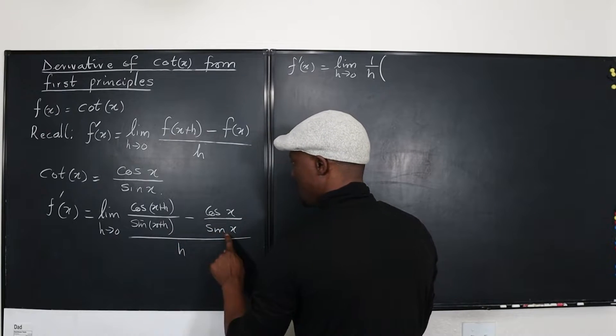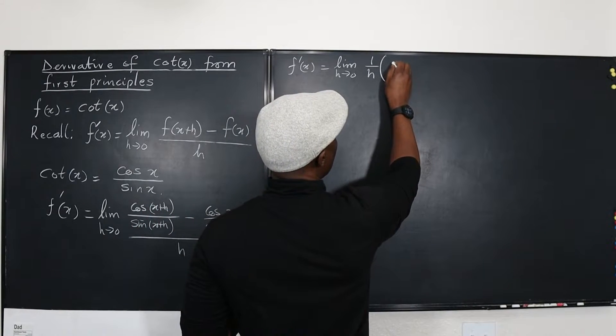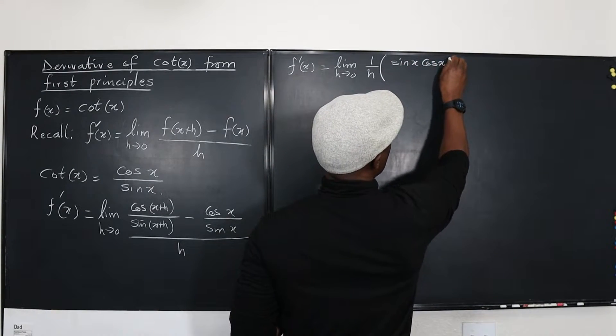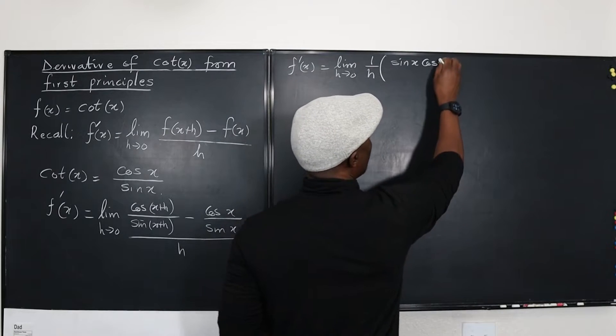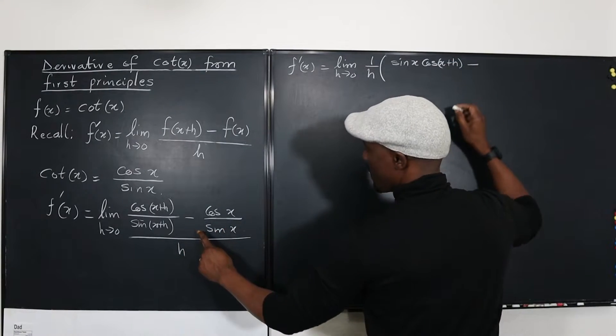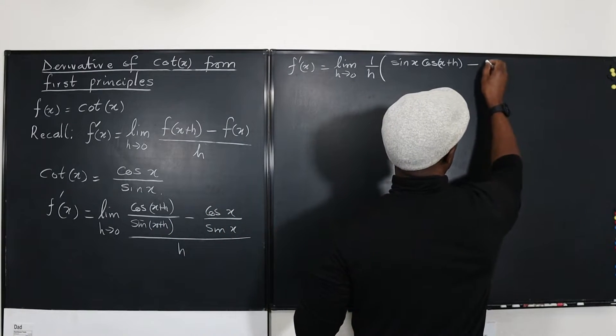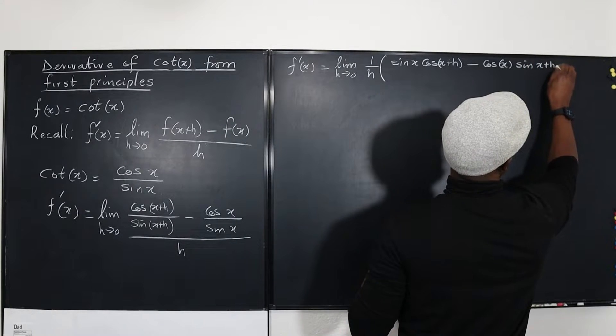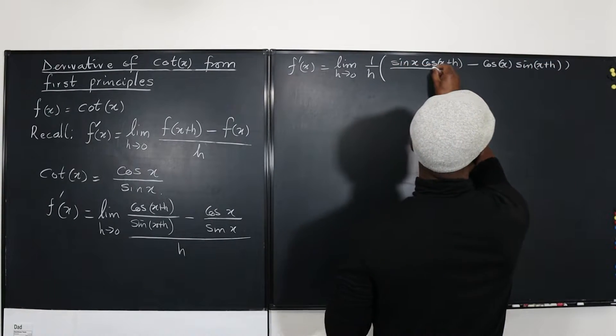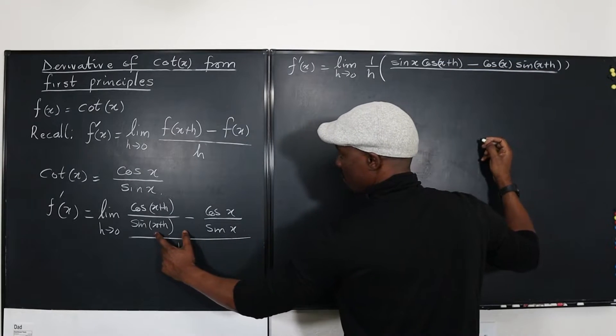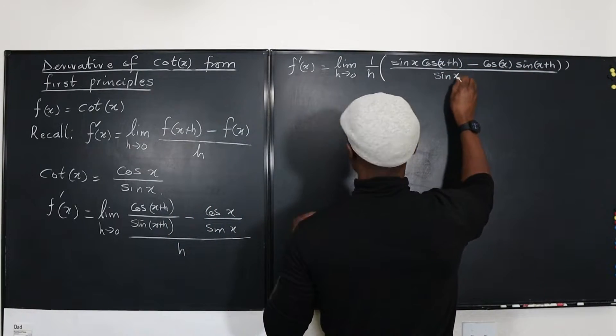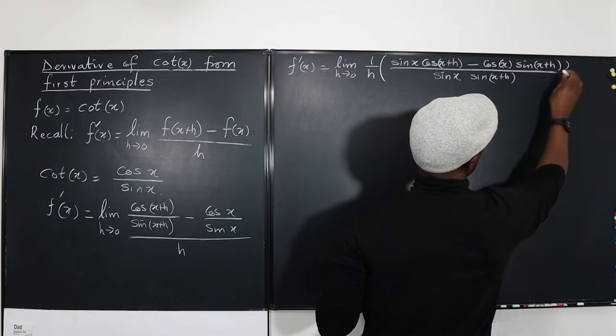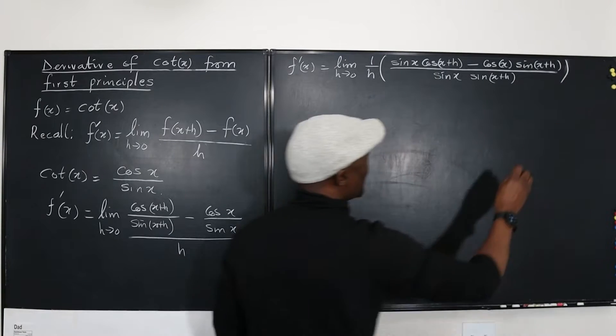So collect like, so it's going to be sine x cosine x plus h. So this is sine x, sine x, cosine x plus h. Okay? Minus cosine x, cosine x, sine x plus h. All divided by the product of this two, which is going to be sine x, sine x plus h. I think this went smoother than I was expecting.